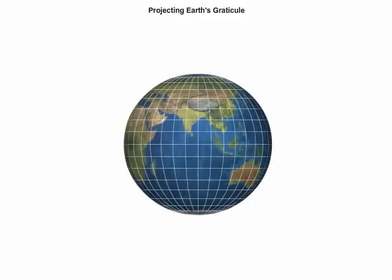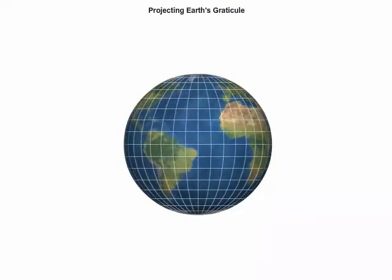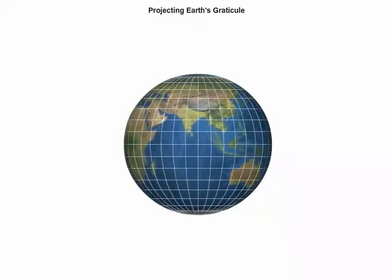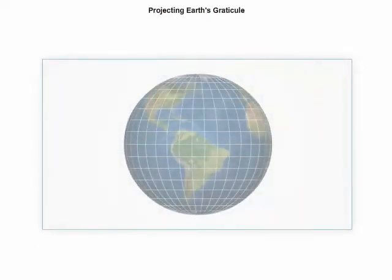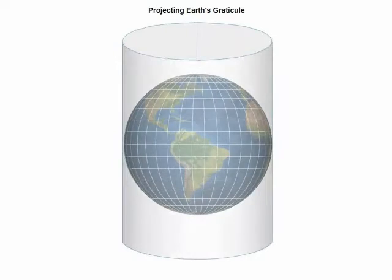Now that you understand Earth's graticule, let's look at how projecting the graticule onto a flat surface results in distortion. While map projection is actually a mathematical process, you can visualize it as the transfer of the graticule and landmasses from the globe to a flat map.